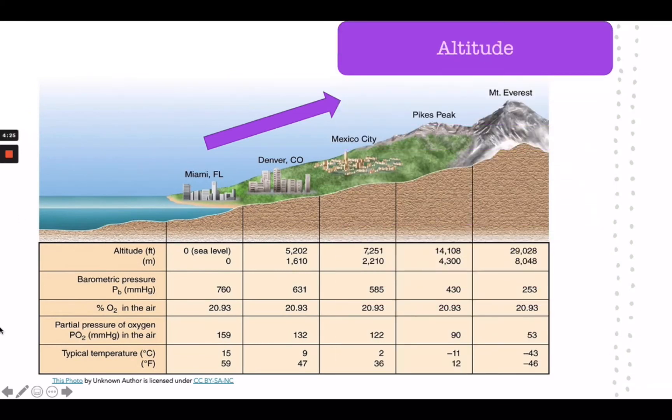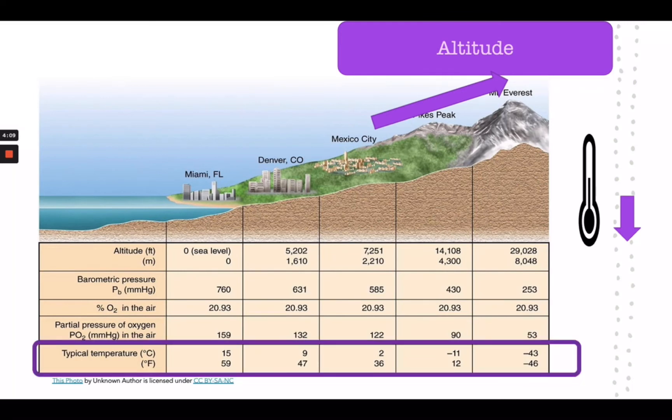Altitude refers to the height or elevation above sea level. As the altitude increases, the air temperature decreases. The altitude of the place will affect the climate. As you can see, the temperature of Miami, Florida is at 15 degrees Celsius. However, as the location is far above sea level, temperature decreases. If you notice, the temperature of Mount Everest is at negative 43 degrees Celsius. Have you ever wondered why people visit Baguio even in summer? It is because of altitude that best explains why Baguio is cold even during summer.